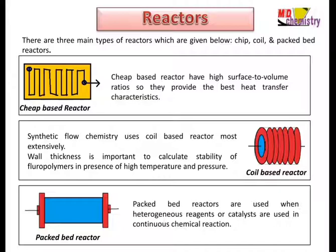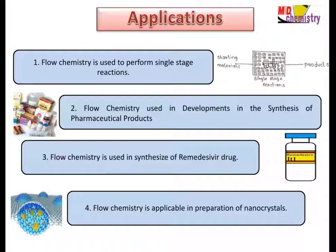Applications of flow chemistry: First, it is used to perform single-stage reactions like alkylation, acylation, cycloaddition, olefination, and cross-coupling reactions. After the development of flow chemistry, the preparation of oligosaccharides also became easier. Second, flow chemistry is used in the synthesis of pharmaceutical products. Initially, continuous flow was used for bulk chemical or petrochemical industries, but over the last decade it has been used to prepare APIs — active pharmaceutical ingredients.